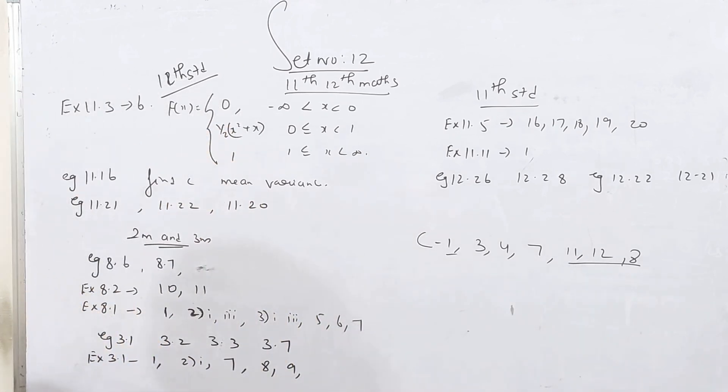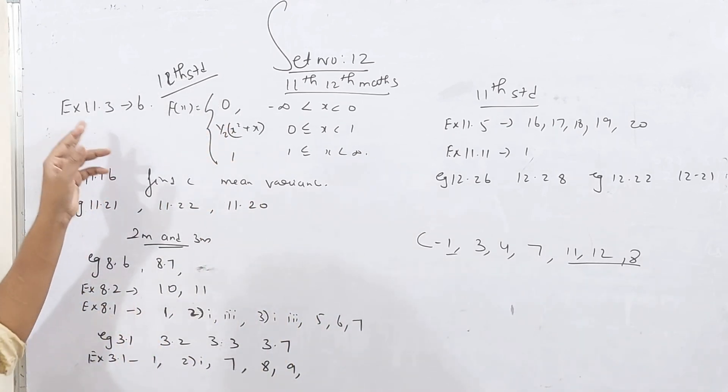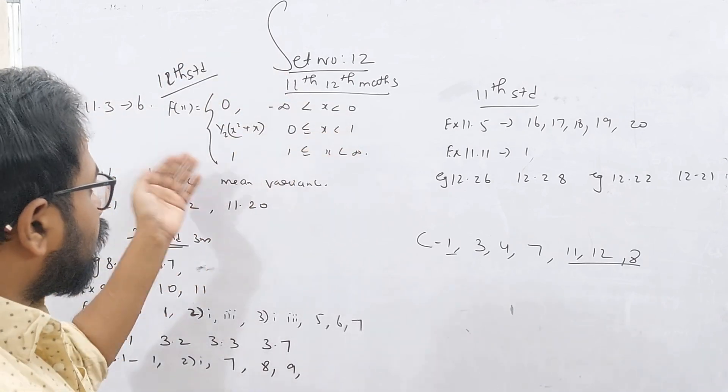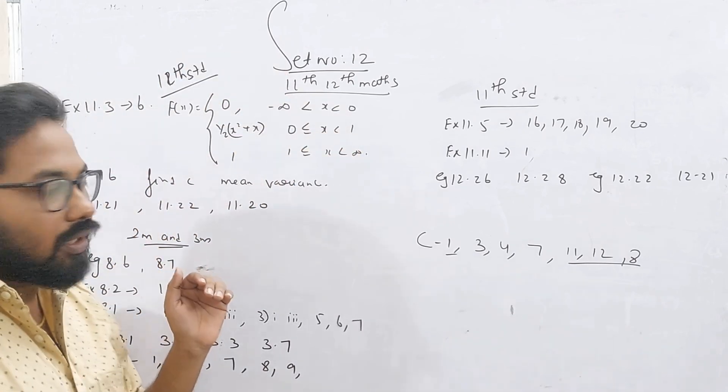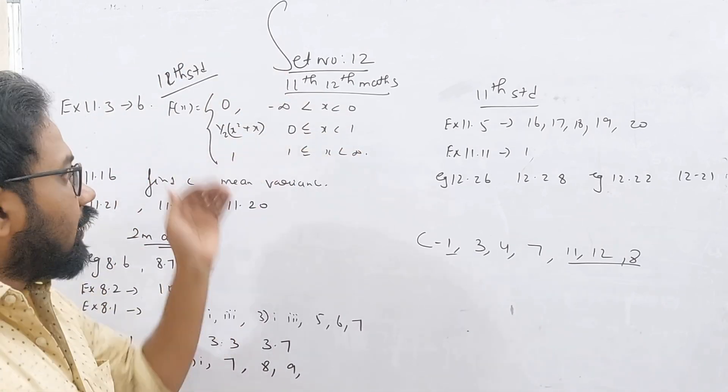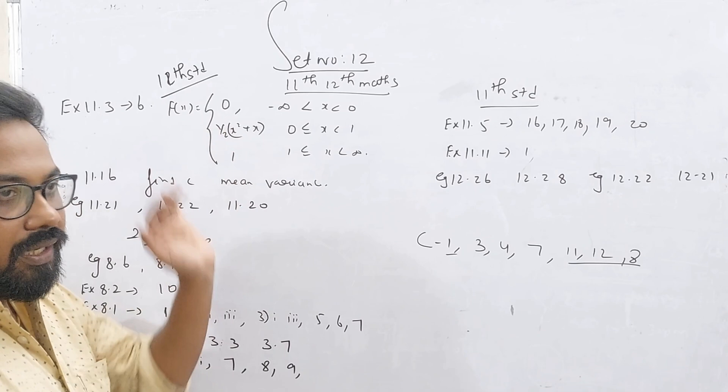For 12th standard, examples 11.3 and the 6th sum are very easy — they cover 2-mark and 3-mark questions. We have to differentiate the answer.